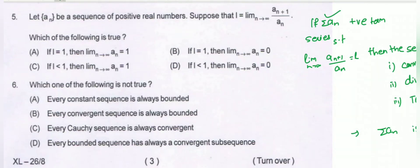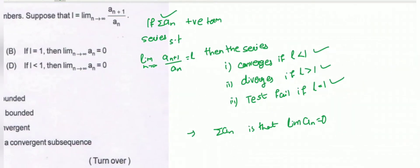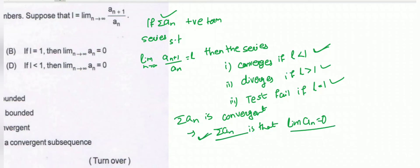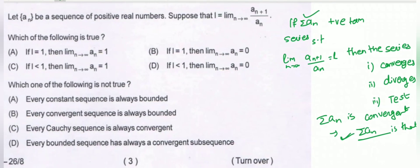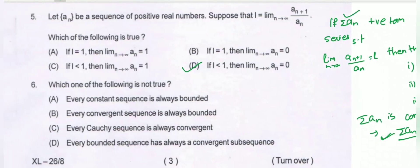Considering options C and D: if l less than 1, then summation aₙ is convergent. By the necessary condition for convergence, if summation aₙ is convergent, then limit aₙ equals 0. So limit n tends to infinity of aₙ equals 0. Option D is the correct option.